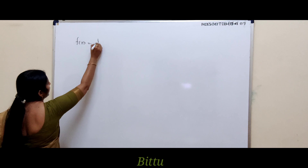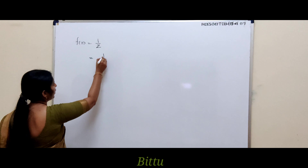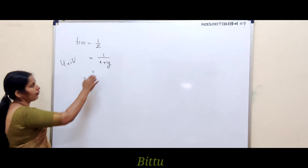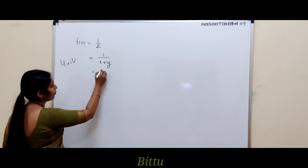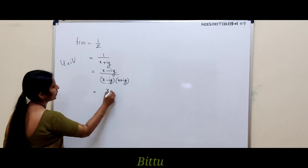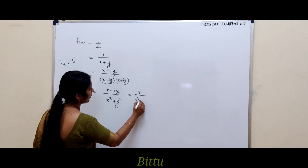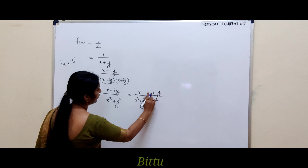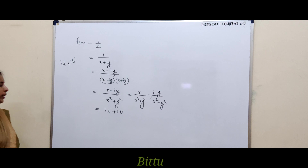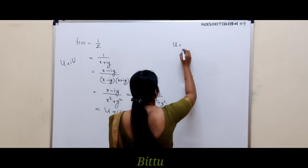Next, consider f = 1/z. We must express it in the form u + iv. Since z = x + iy, we multiply numerator and denominator by the conjugate x − iy: 1/z = (x − iy)/(x² + y²). So u = x/(x² + y²) and v = −y/(x² + y²).